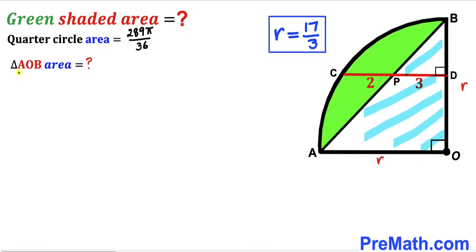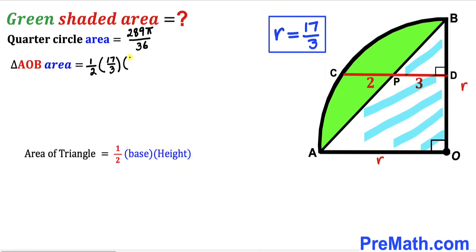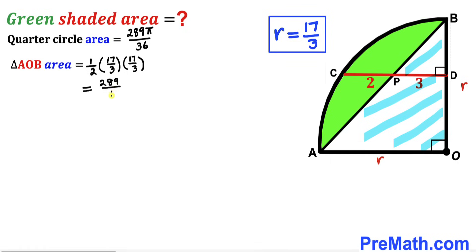Next, we calculate the area of right triangle AOB. Using Area = ½ × base × height, the base is r and the height is r, with r = 17/3. So the area is ½ × (17/3) × (17/3) = 289/18 square units.